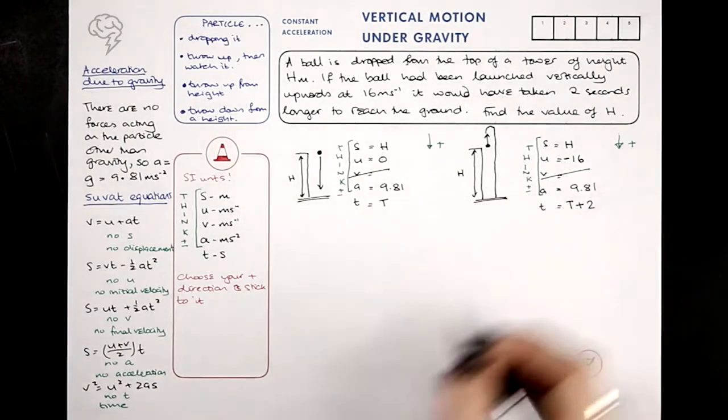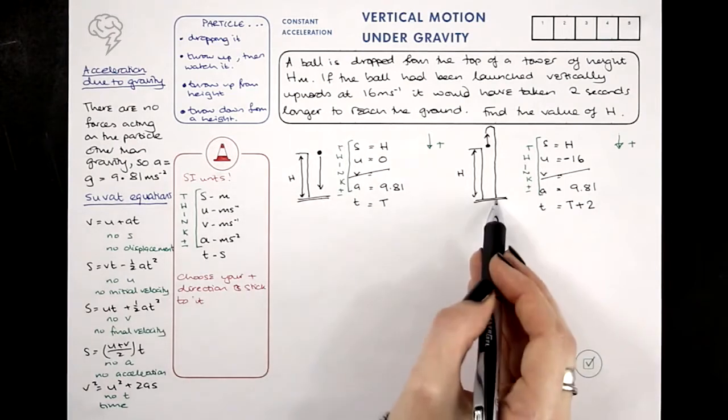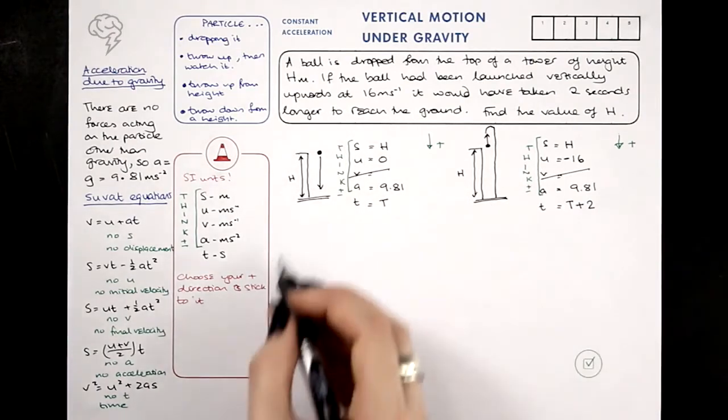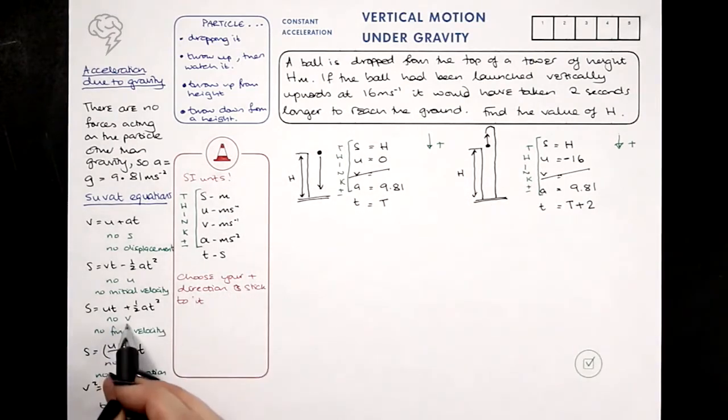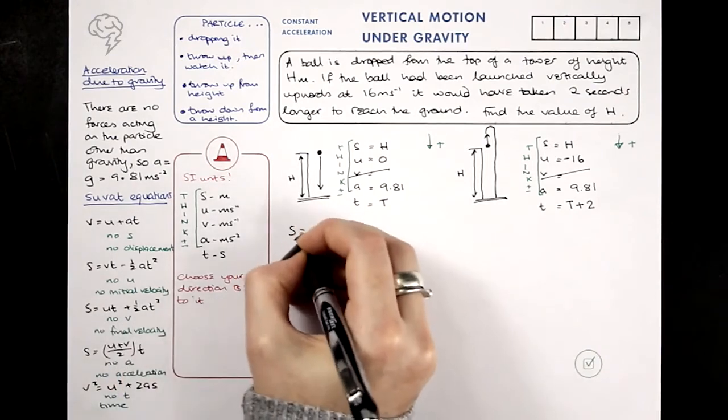Now we don't care about V. No one cares what speed it's going when it lands. No one's interested. They haven't told us. They haven't asked either. So we can use the equations without V. S equals UT plus a half AT squared.